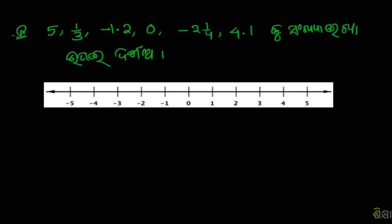This is a question that you can see. This is the number line. This is the decimal number. This is 5, simply 5. This is 5 points.